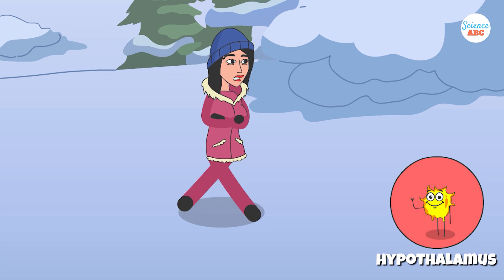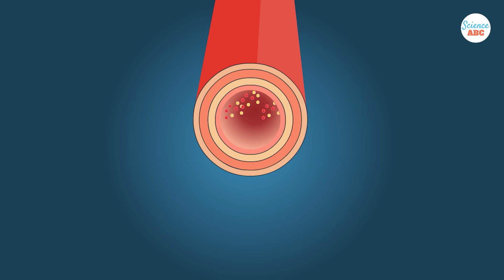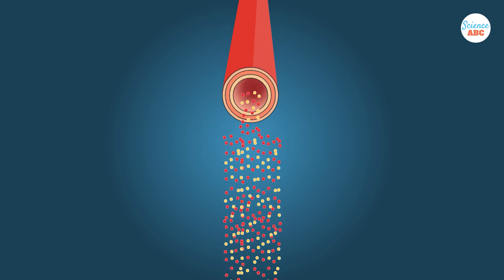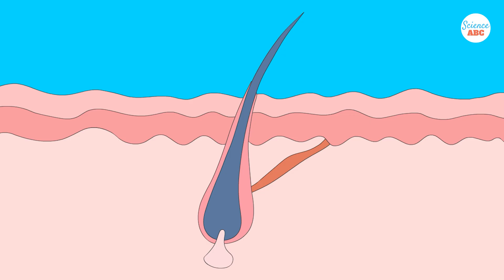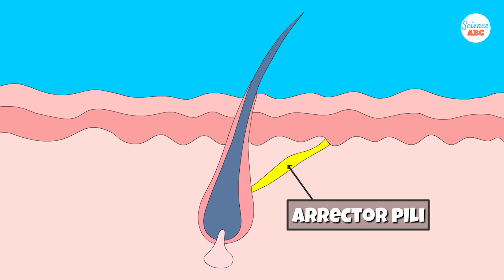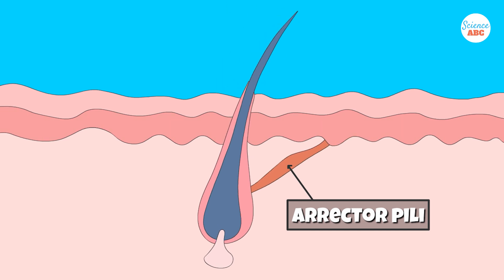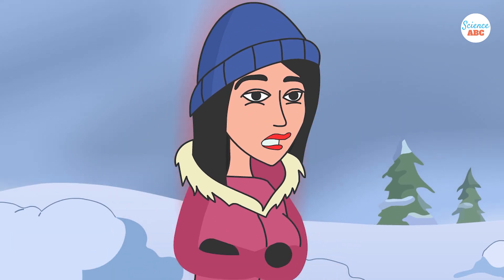If it's too cold, the hypothalamus sends signals to warm us up. This includes signals to the blood vessels to narrow, or vasoconstrict. Narrow blood vessels mean less blood will reach the skin, so we lose less heat. Erector pili — small muscles attached to hair follicles in the skin — will contract to cause goosebumps, which serve to trap a layer of air between the hairs. We may also begin to shiver, which generates a lot of heat from muscle activity.